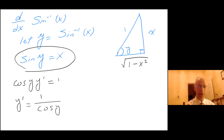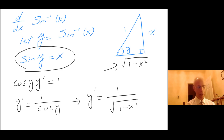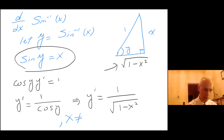So y prime equals 1 over cosine of y. Cosine of y is adjacent over hypotenuse, and the hypotenuse is 1, so this implies that y prime equals 1 over the square root of 1 minus x squared.